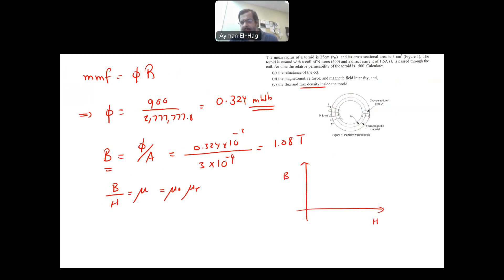And the B-H curve starts as linear and becomes nonlinear. In that region, the mu is constant. The B over H, which is the slope of the line, is basically your mu. It's a constant value.